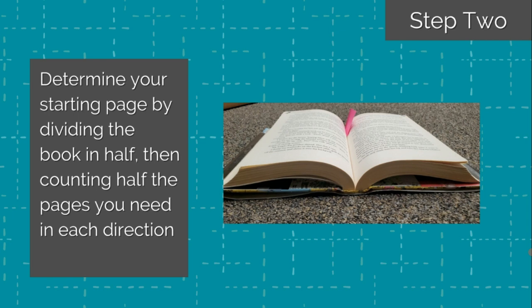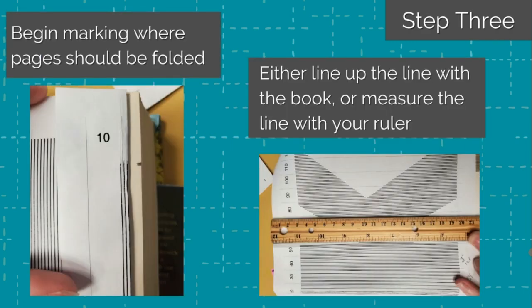Once you have figured out which page is the first that will need to be folded, you can begin marking where you will be folding the pages. Make sure you measure from the top of the page each time to keep things consistent. Once all of the pages are marked, you can begin folding the pages.